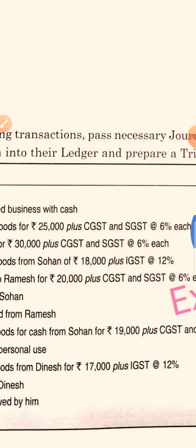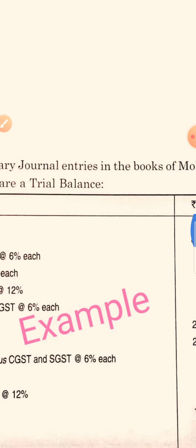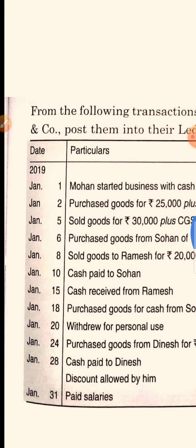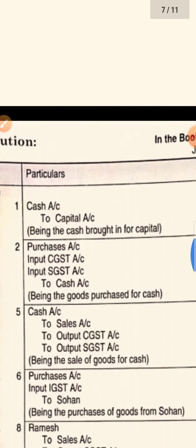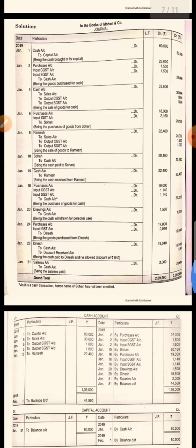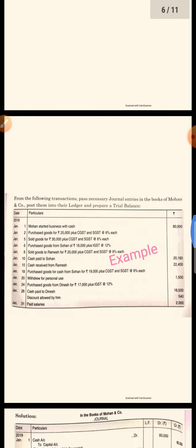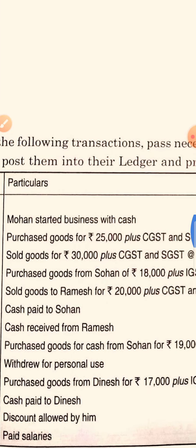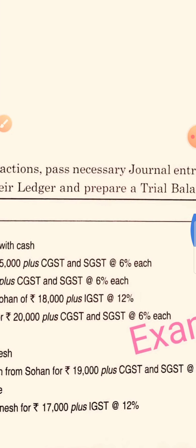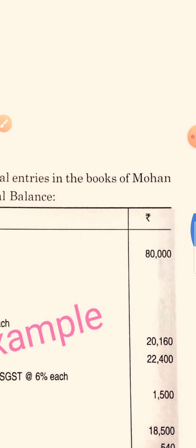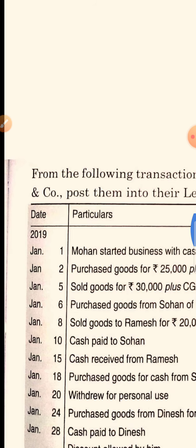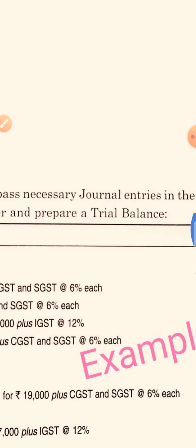Now an example question: From the following transactions, pass necessary general entries in the book of Mohan and Company, post them into ledgers, and prepare the trial balance. I have already learned to make general entries and ledgers, but today we will learn to make the trial balance.